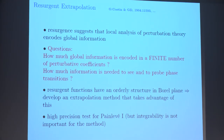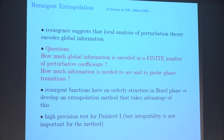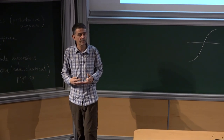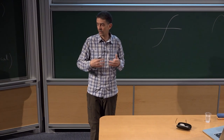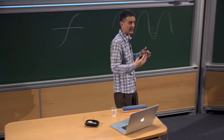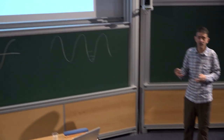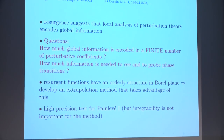Resurgence suggests that local analysis should encode global information. The question is how much global information. If you work in the Borel plane and what you're calculating is a resurgent function — as we expect in physics — then there should be some orderly structure in the Borel plane, not totally random. Can we develop extrapolation techniques that take advantage of that? I'll illustrate with Painlevé I, since everybody is familiar with it, it's physically interesting, and we can do extreme precision tests because we know everything analytically.